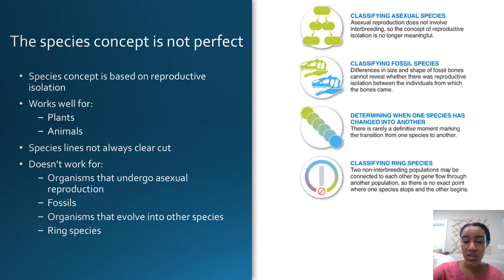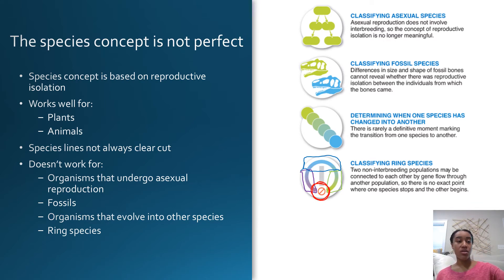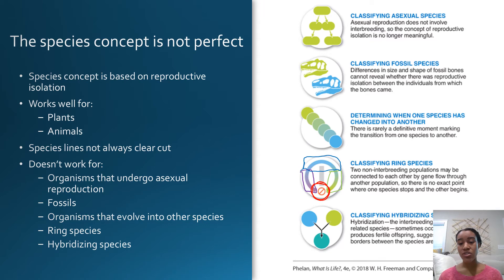In this image, the species on one side and the species on the other side are two distinct species that have the ability to reproduce with one another and make fertile hybrids in the center. However, when you come to a different area of the territory, those two species can no longer reproduce with one another. This is the challenge of ring species. Similarly, hybridizing species — where two species can produce a fertile hybrid offspring — also complicate where the line gets drawn.